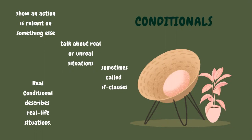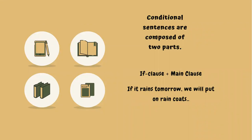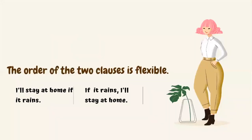Conditionals talk about real or unreal situations. Sometimes they are called if-clauses. Real conditionals describe real life situations. Conditional sentences are composed of two parts: an if-clause plus a main clause. For example, if it rains tomorrow we will put on raincoats.